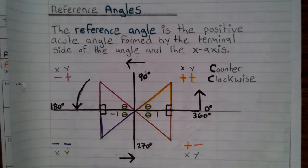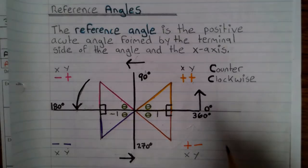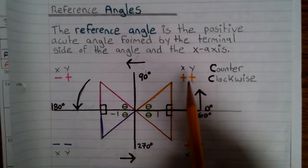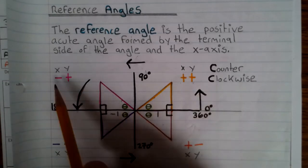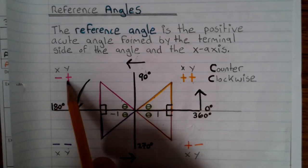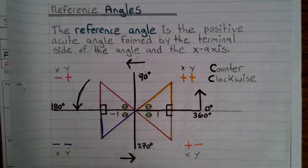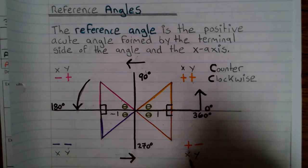A couple things to note: when we talk about quadrants, x and y are positive-positive in the first quadrant, negative-positive in the second quadrant, negative-negative in the third quadrant, positive-negative in the fourth quadrant. Notice which one's positive — the x in this case — and that y is negative, and so on.